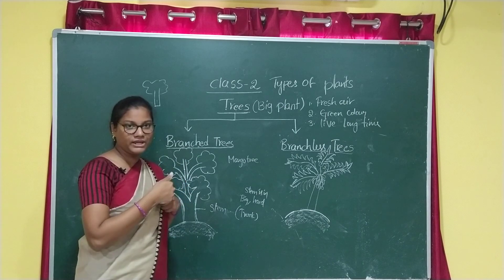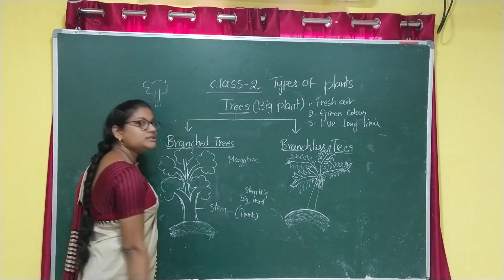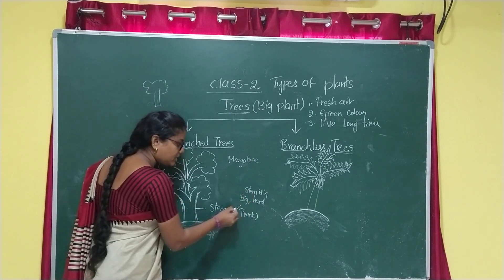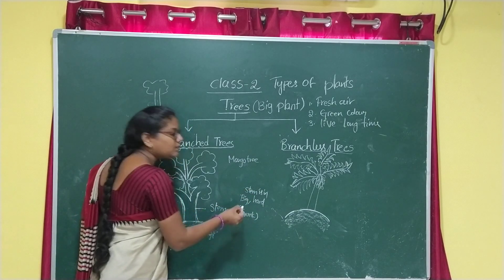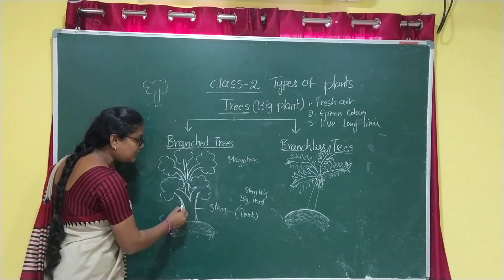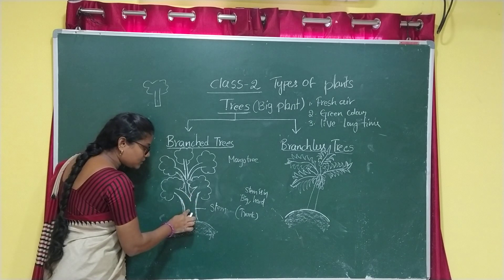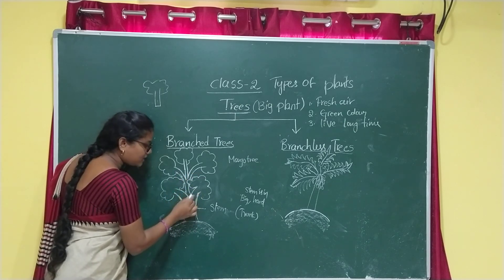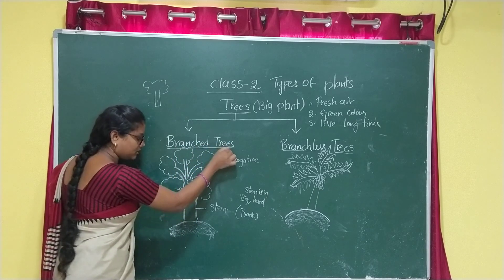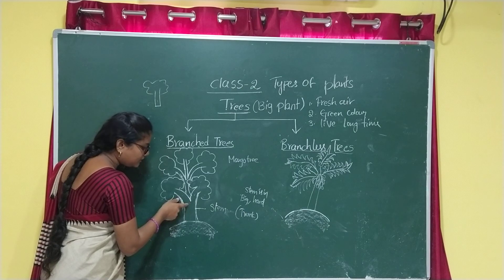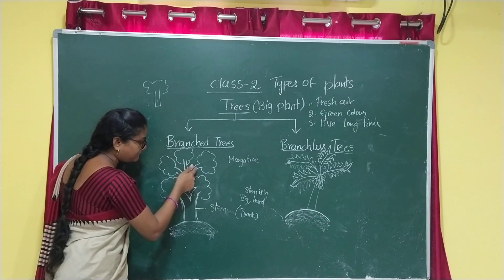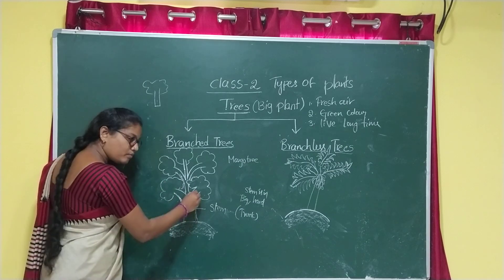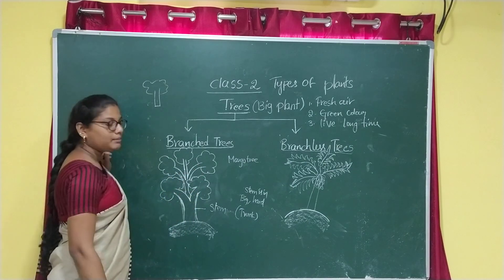When we hit the stem, we will feel pain. The stem that is big in size and hard in nature is known as a trunk. For example, the mango tree has one stem. This stem is connected to many branches. The branches are connected to the stem — it is known as a branched tree. It has one stem and the stem produces branches.